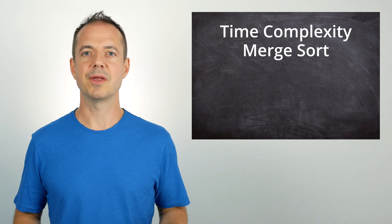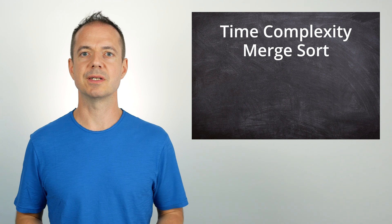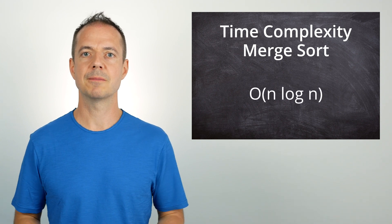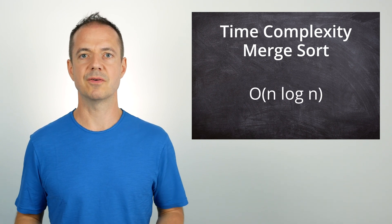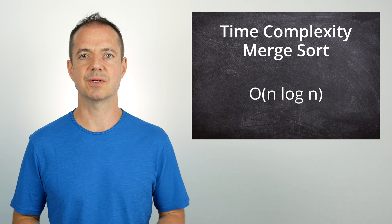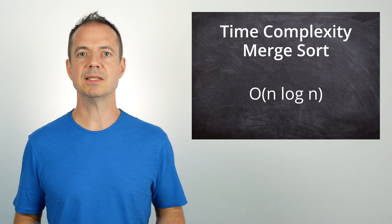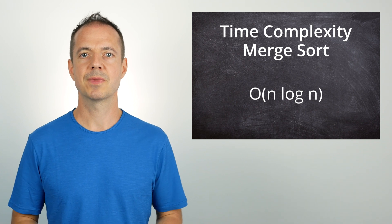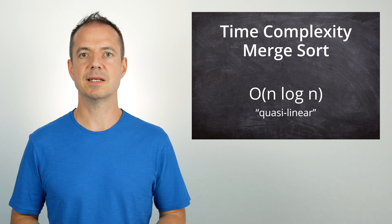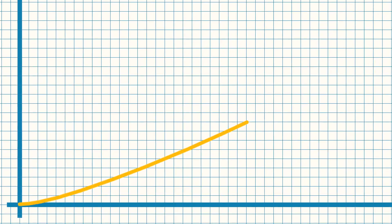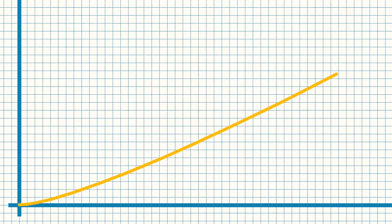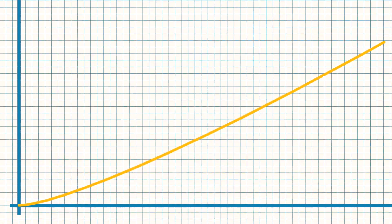Therefore, the time complexity of merge sort is order n times log n. And that is independent of whether and how the numbers are pre-sorted. So, for merge sort, we have no distinction in best, worst and average case. We refer to this complexity class as quasi-linear, since the logarithmic part hardly matters for large n, and the curve is almost indistinguishable from a linear one.